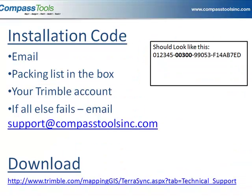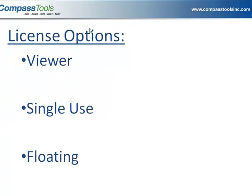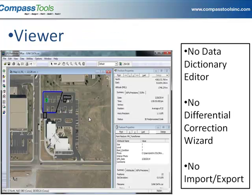While that downloads, I wanted to talk about the different license types with Pathfinder Office. You can install Pathfinder Office in viewer mode, as a single-use license, or a floating license. Viewer mode is not a bad way to go — you don't use your license at all. You install Pathfinder Office and pick viewer during installation, and it never asks you for a license. With Pathfinder viewer, you can have background maps, open your data, transfer data off your GPS unit, and click to see all the information about your data. So viewer is pretty good, but you're not able to create data dictionaries, do differential correction, or import or export data without a license.